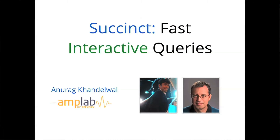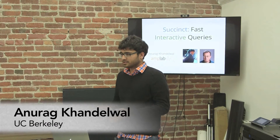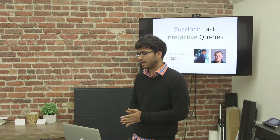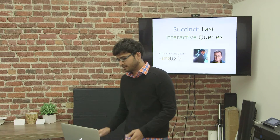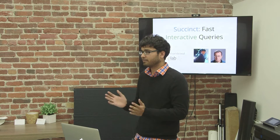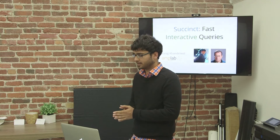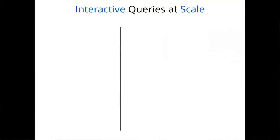Hello everyone, and thank you Alexi, Ravel, and Adam for having me here. I'm Anurag, currently a PhD candidate at UC Berkeley. Today I'm going to be talking about Succinct, which is a system we've been working on at the AMP Lab to enable fast interactive queries at scale on huge volumes of data. This is joint work with Rachit, who is currently a professor at Cornell, and my advisor Ion Stoica at UC Berkeley, who you might know as the chairman of Databricks, the company that started Spark.